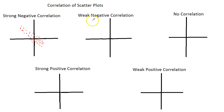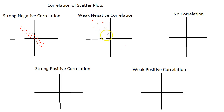Now, weak negative correlation — the dots are much more spread out. However, they still follow a negative trend.